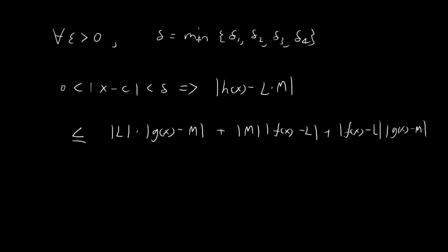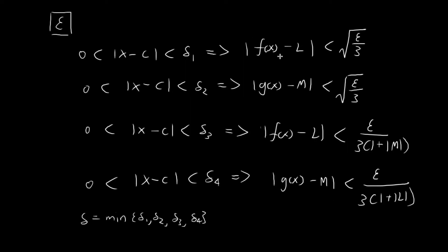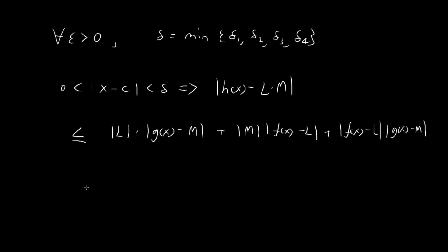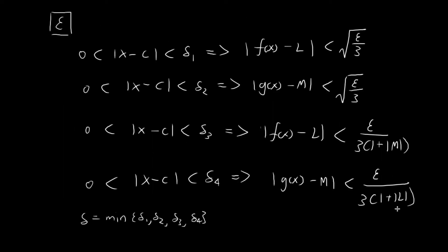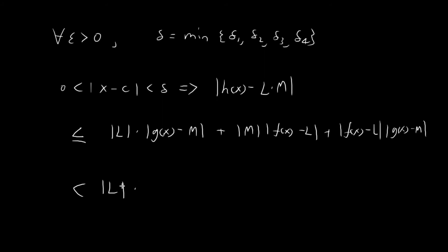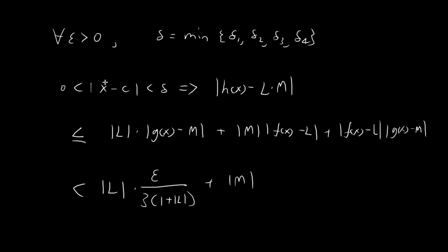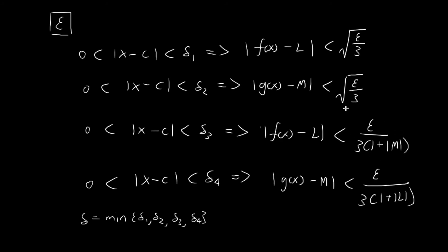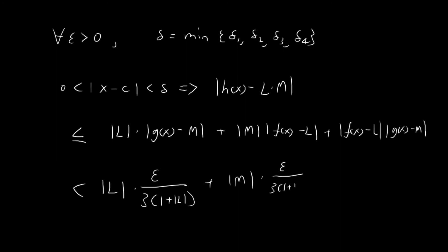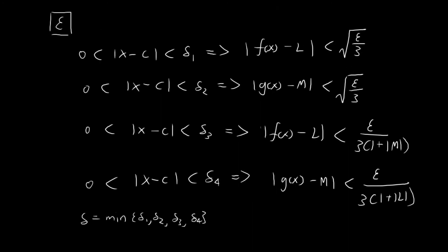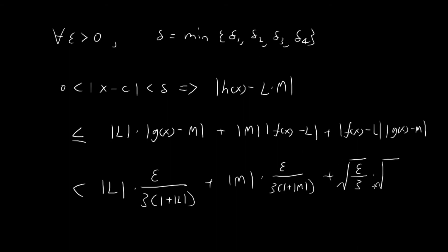Since |x - c| < delta, all four conditions hold. For the first term, |g(x) - M| < ε / (3(1 + |L|)), so |L|·|g(x) - M| < |L|·ε / (3(1 + |L|)). For the second term, |f(x) - L| < ε / (3(1 + |M|)), giving |M|·ε / (3(1 + |M|)). For the third term, both |f(x) - L| and |g(x) - M| are each less than √(ε/3), giving √(ε/3) · √(ε/3) = ε/3.